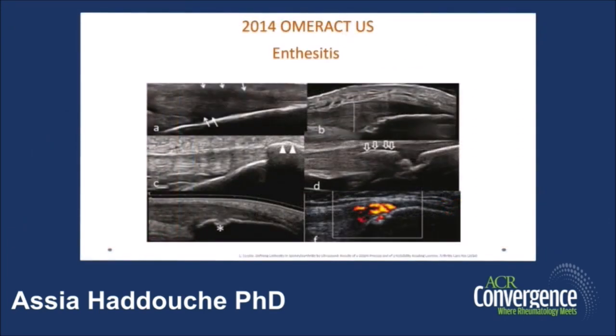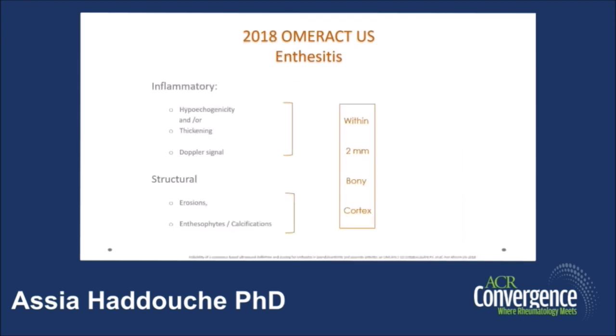On the same article, they also gave the definition of elemental lesions of enthesitis as seen on this figure. On A, hypoechogenicity; on B, increased thickness of the tendon; on C, an enthesophyte; on D, calcification; erosion on E; and on F, Doppler signal at 2 mm from the bony cortex. In 2018, OMERACT verified the ultrasound definition of the enthesis and limited it to these elementary lesions found only in the area within 2 mm from the bony cortex.